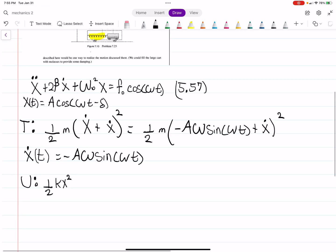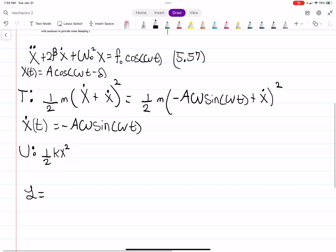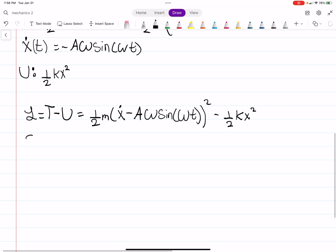So with our potential energy and our kinetic energy, we can now construct the Lagrangian as just T minus U, which is one half M times X dot minus A omega sine of omega T squared. And then from that, we're going to subtract off our potential energy as one half K X squared. So with our Lagrangian, now we can do our Euler Lagrangian.